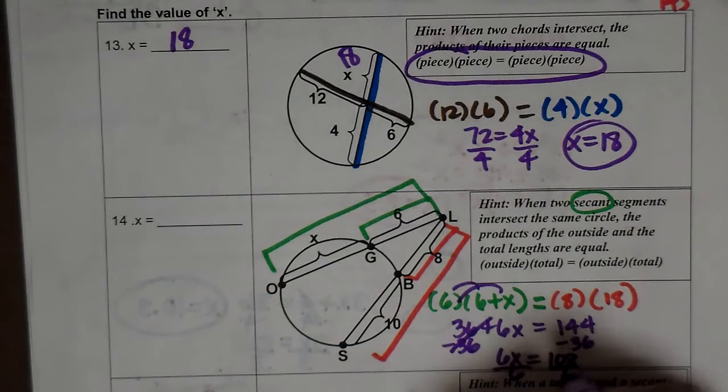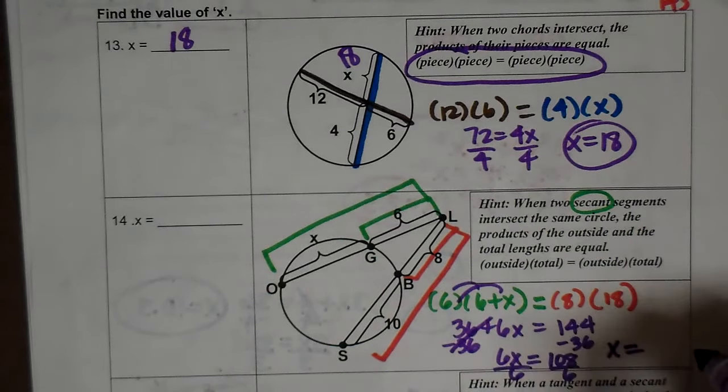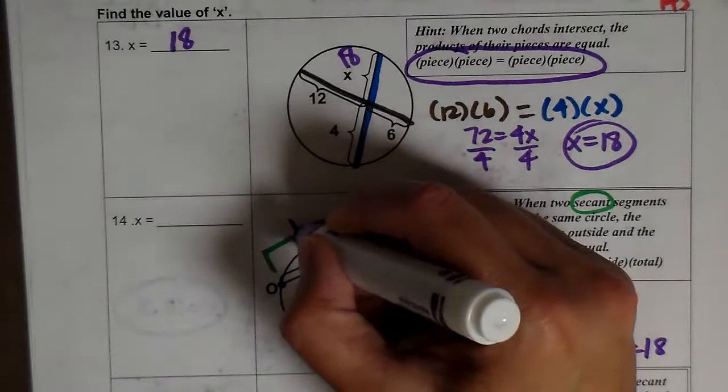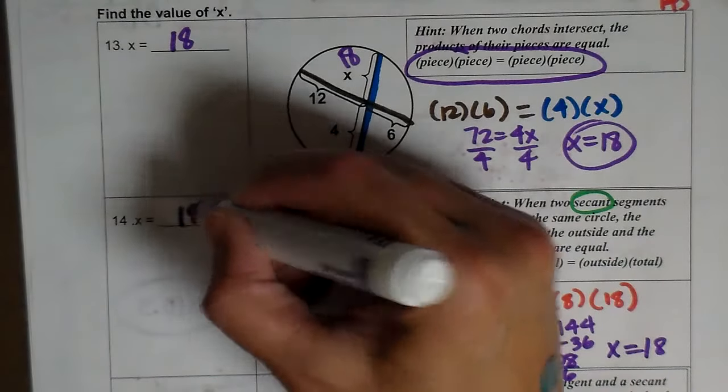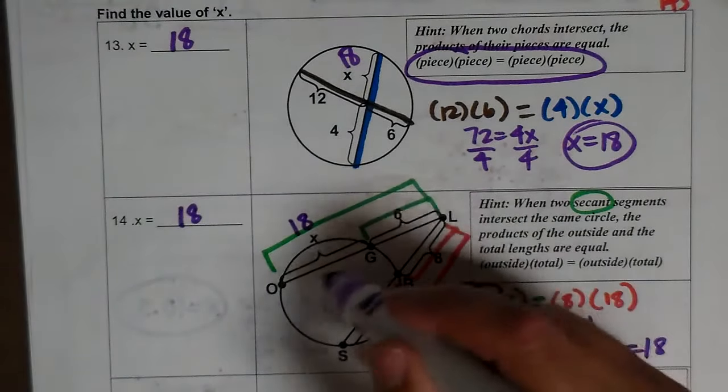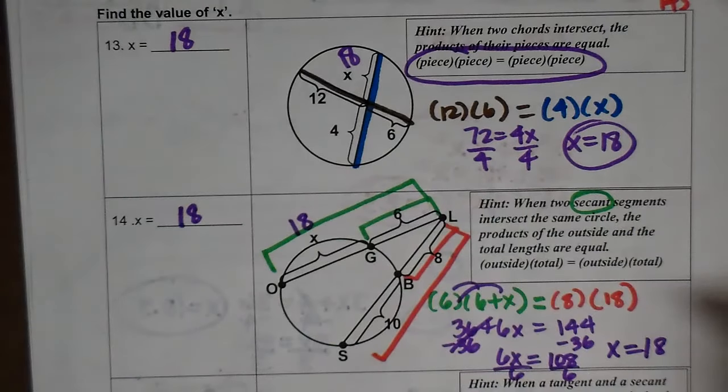And then I divide both sides by 6. So x is going to equal 18. It just happens to equal 18 again. Two in a row for 18. So 6 times 24 equals 8 times 18, which works.